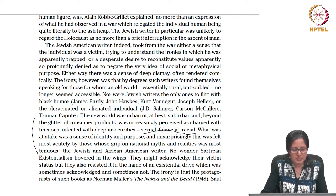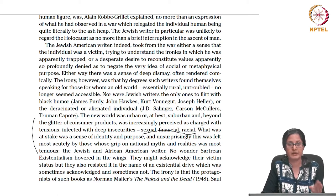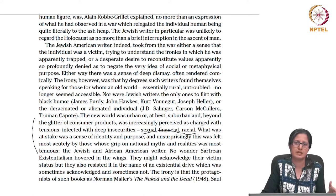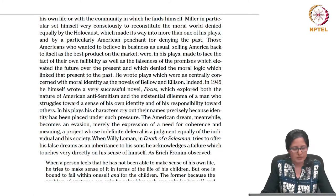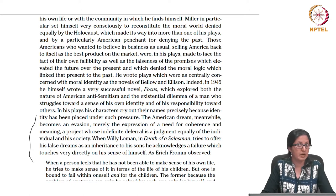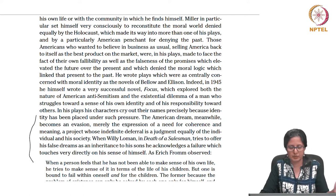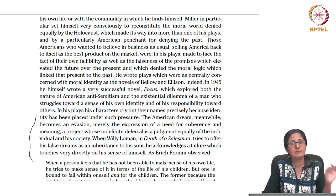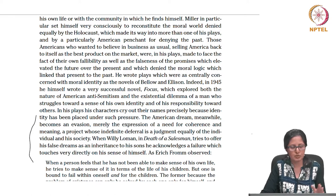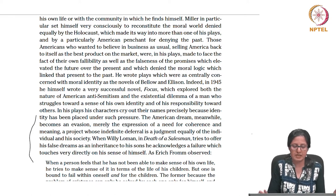What was at stake was a sense of identity and purpose — something we saw very heavily in the latest play we looked at, A Raisin in the Sun. Unsurprisingly, this was felt most acutely by those whose grip on national myths and realities was most tenuous — the Jewish and African American writer — which is precisely what we witnessed in Hansberry's play. In this context, looking at these plays where the American dream is dealt with in so many different ways, we find that the American dream becomes an evasion, merely the expression of a need for coherence and meaning.